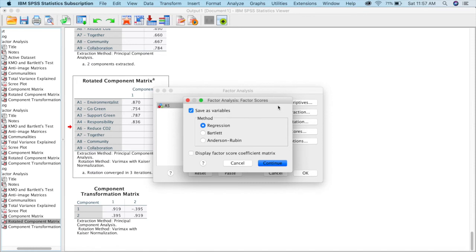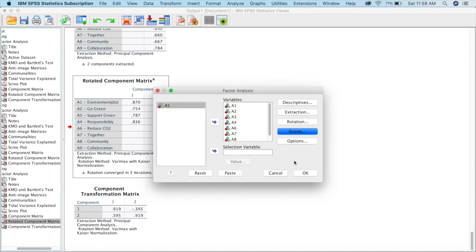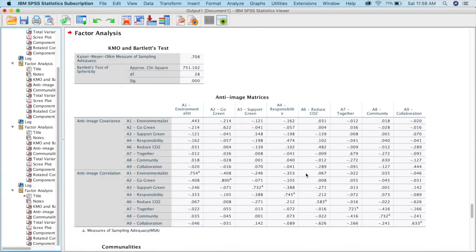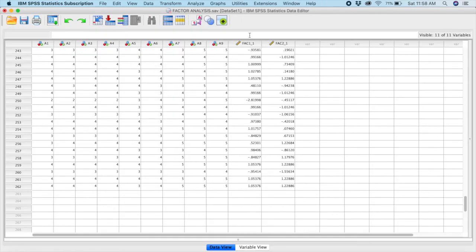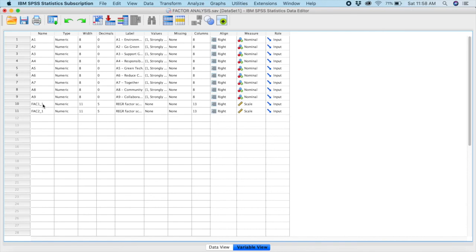Can you see here it's written Factor Scores? You click continue and okay. Now if you go to your variable view, can you see your two new variables already being created over here? What you can do is go to your variable view and you can rename your variables.